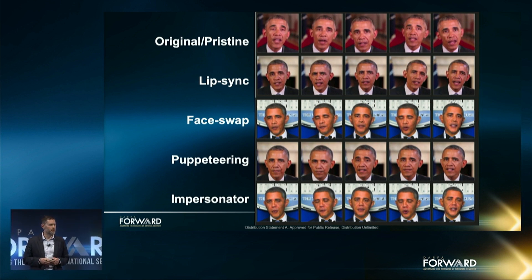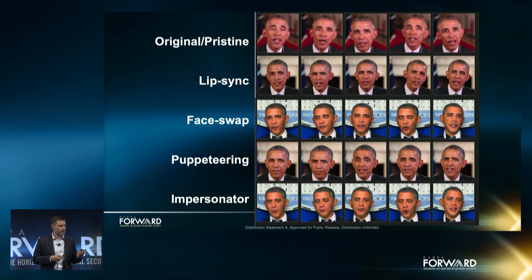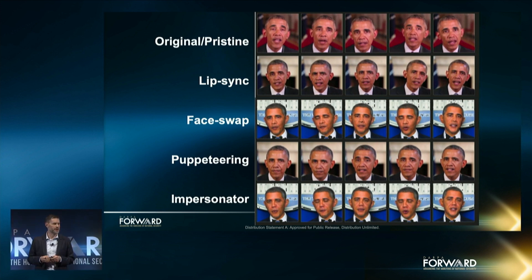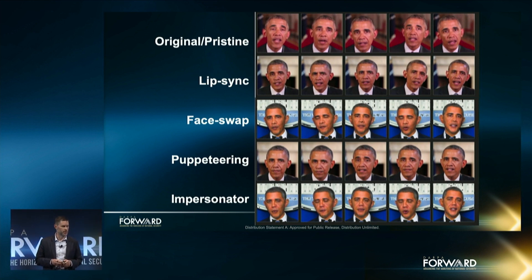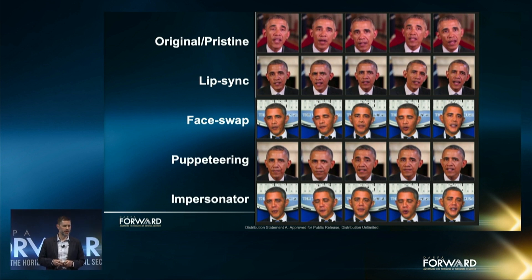In face swap, the face of the person in the source video is replaced with the image of the target in the deepfake, altering that region of the face. The audio track, facial expressions, mouth and head movements, and backgrounds are all preserved in face swap. Puppeteering is an even more sophisticated approach, where another video is used to drive the facial expressions of the target in the deepfake video. And lastly, impersonator video — these may not have any digital manipulations, which I'll illustrate in detail next.